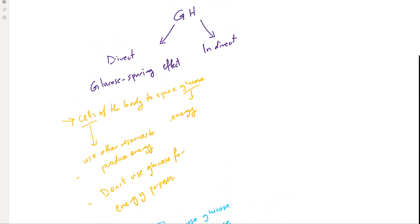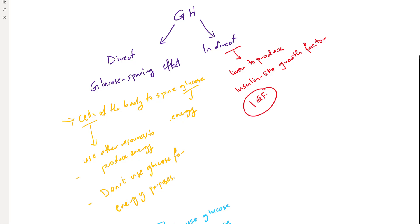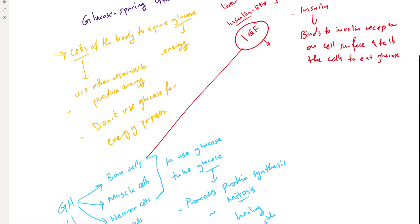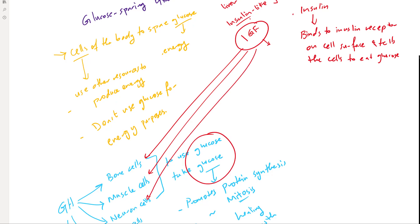The indirect mechanism basically asks the liver to produce something called insulin-like growth factor (IGF). This IGF acts like insulin. Insulin binds to the insulin receptor on the cell surface and tells the cells to take up glucose. Similarly, IGF will bind to insulin receptors and ask the cells to take up glucose. This IGF will target the bone cells, muscle cells, and neuron cells, asking them to use the glucose.